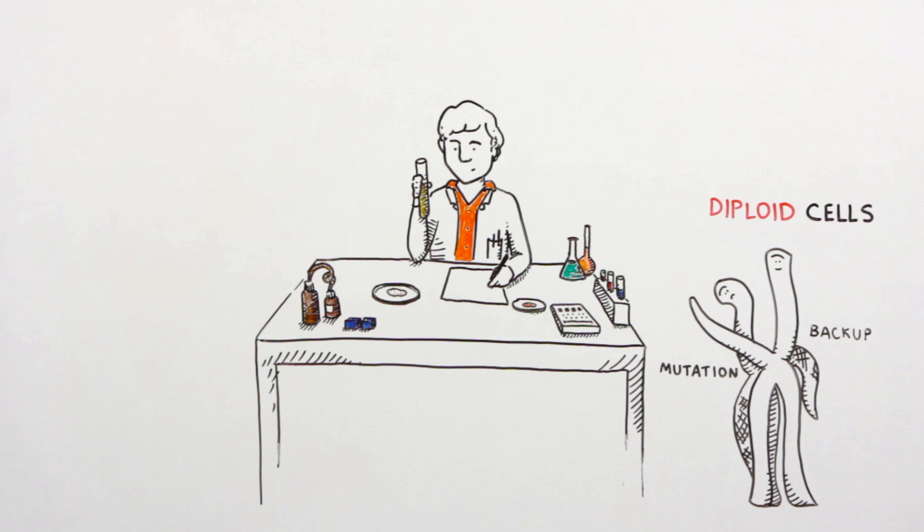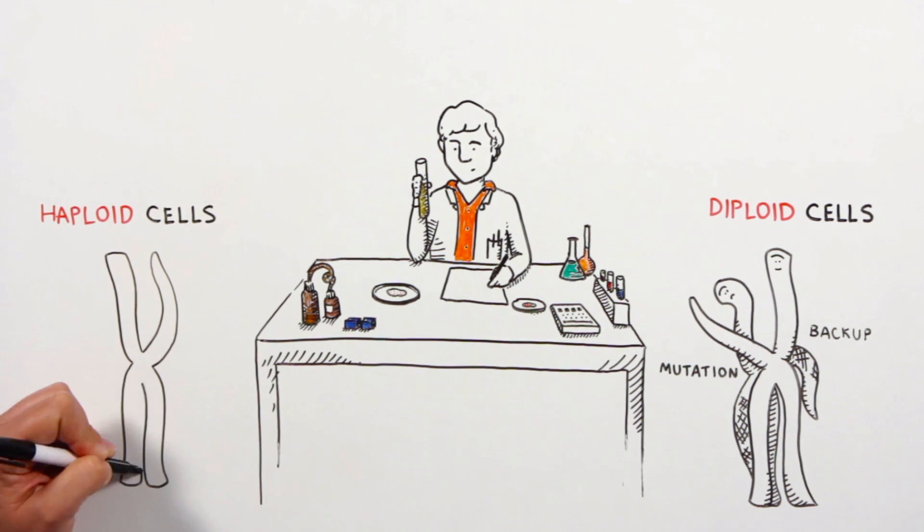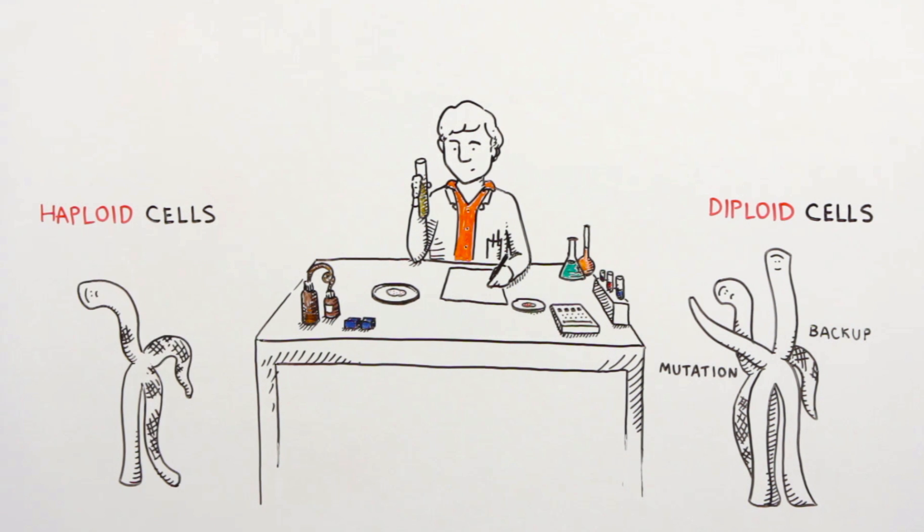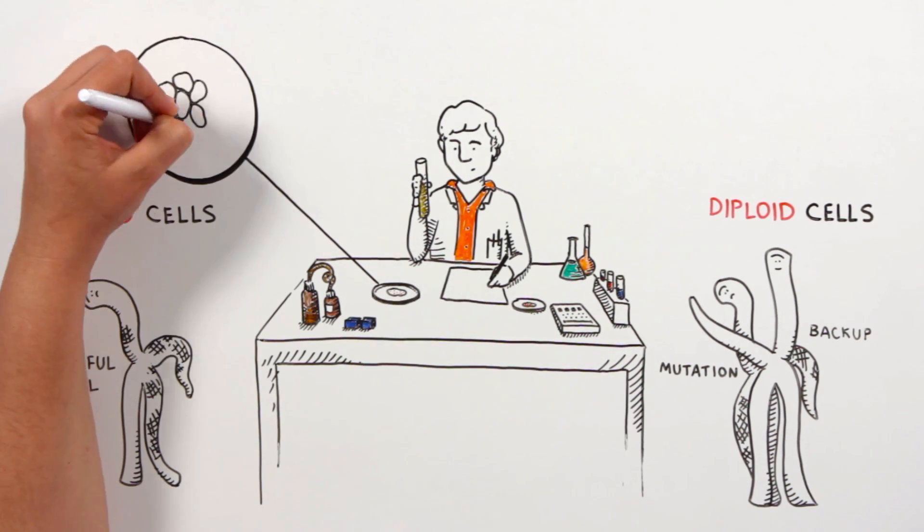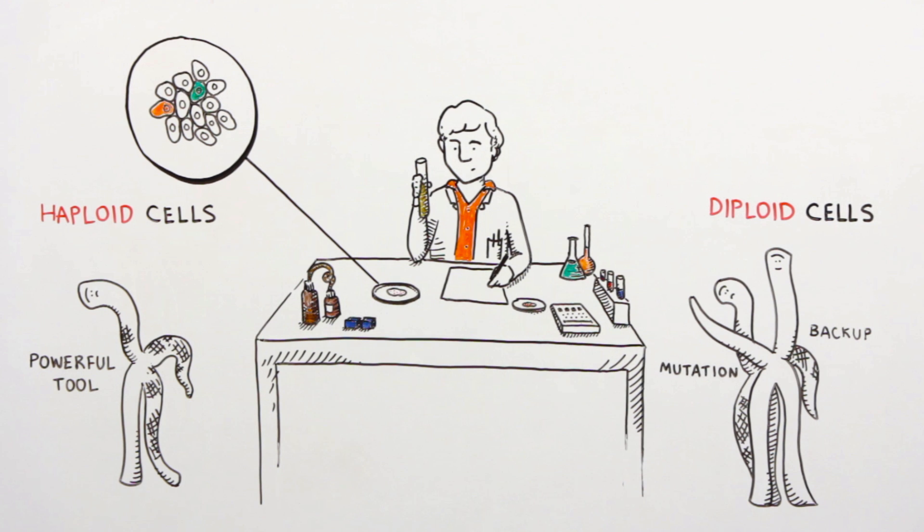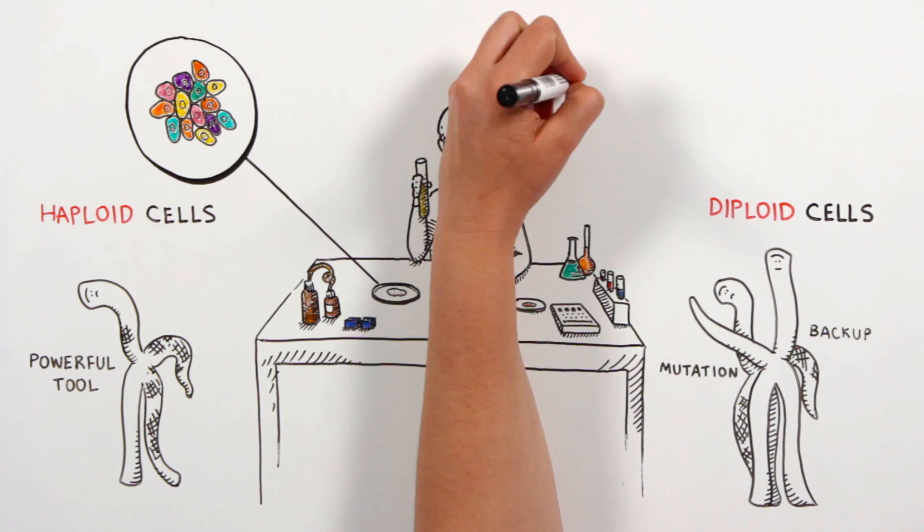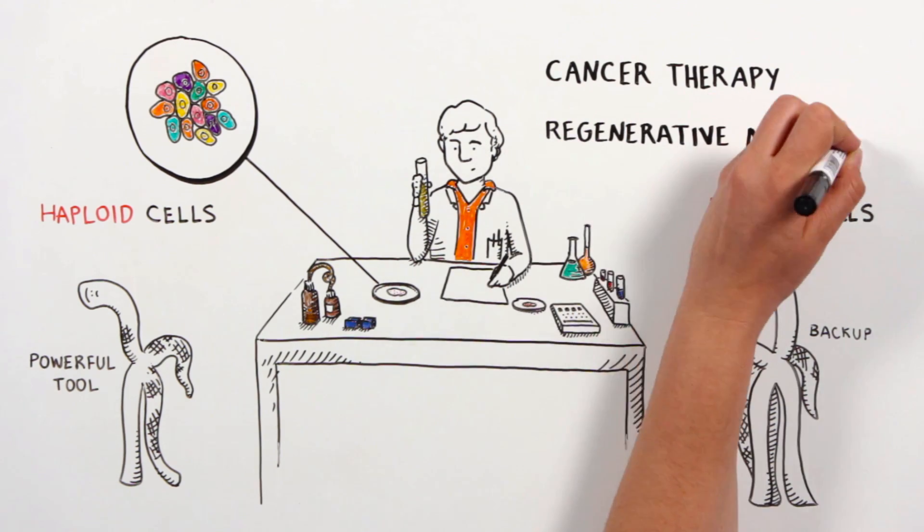The researchers were able to show that by virtue of having just a single copy to target, haploid human cells constitute a powerful tool for genetic screens. Being able to affect single copy genes in haploid human stem cells will greatly facilitate genetic analysis in biomedical fields, such as cancer therapy and regenerative medicine.